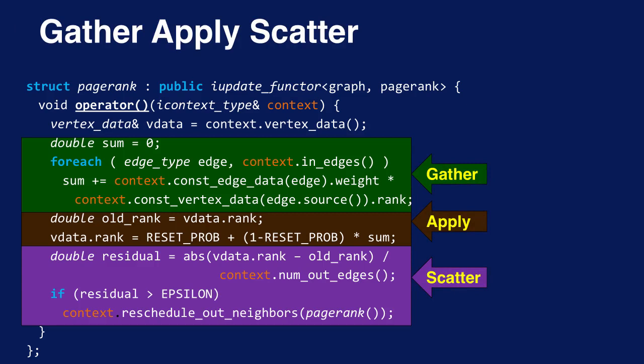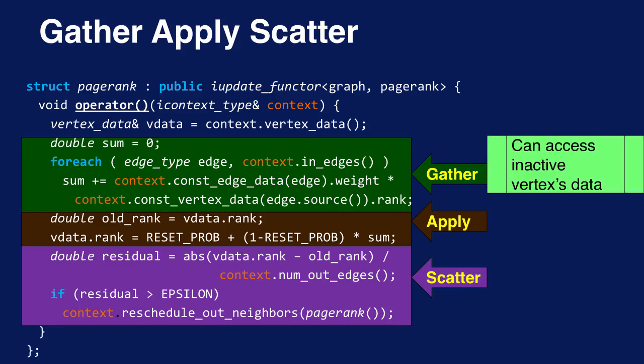What's different about GraphLab? Rather than adopting a message passing or data flow model like Pregel, GraphLab allows the user-defined update function complete freedom to read and modify any data on adjacent vertices and edges. A receiving vertex has access to adjacent vertices' data even if those vertices did not schedule the current update. In contrast, for Pregel, control is with the sending nodes — an update can only happen when a node sends out messages. For dynamic versions of PageRank, this distinction is very important.